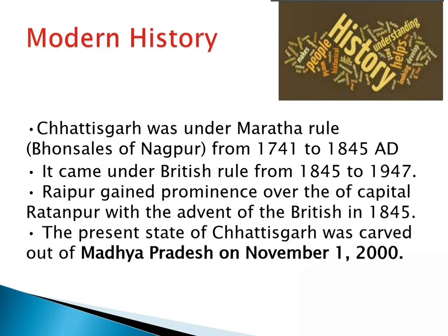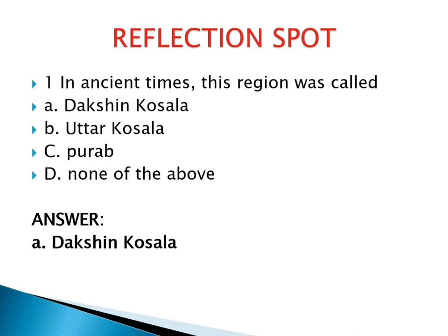Modern History: Chhattisgarh was under Maratha rule from 1741 to 1845 AD. It came under British rule from 1845 to 1947, and Raipur gained prominence over the capital Ratanpur with the advent of the British in 1845. The present state of Chhattisgarh was carved out of Madhya Pradesh on 1st November 2000.